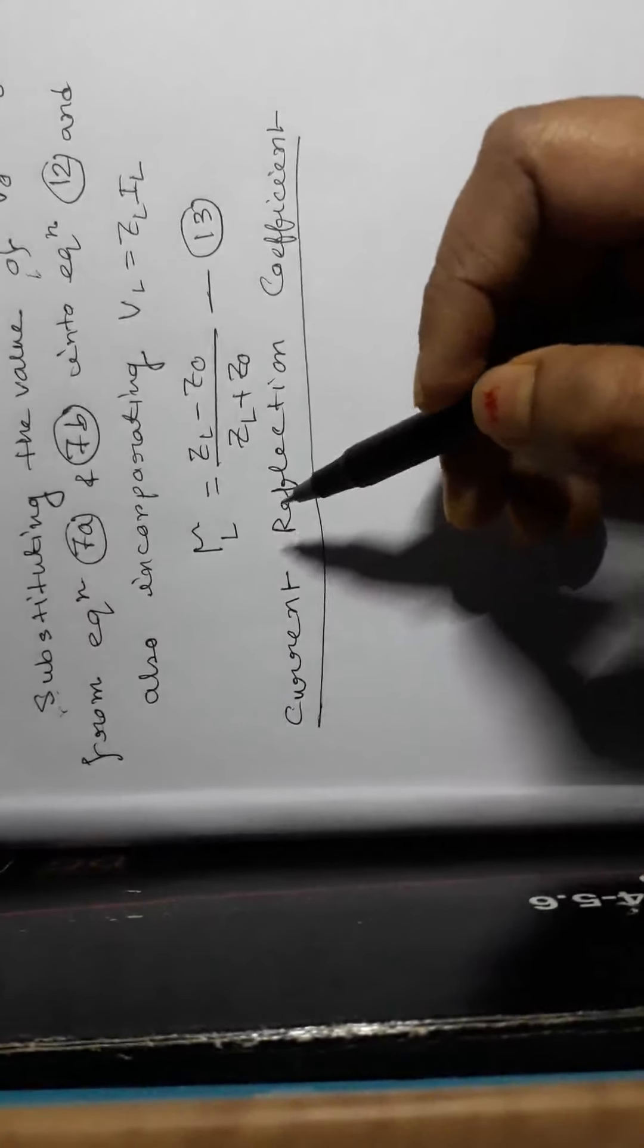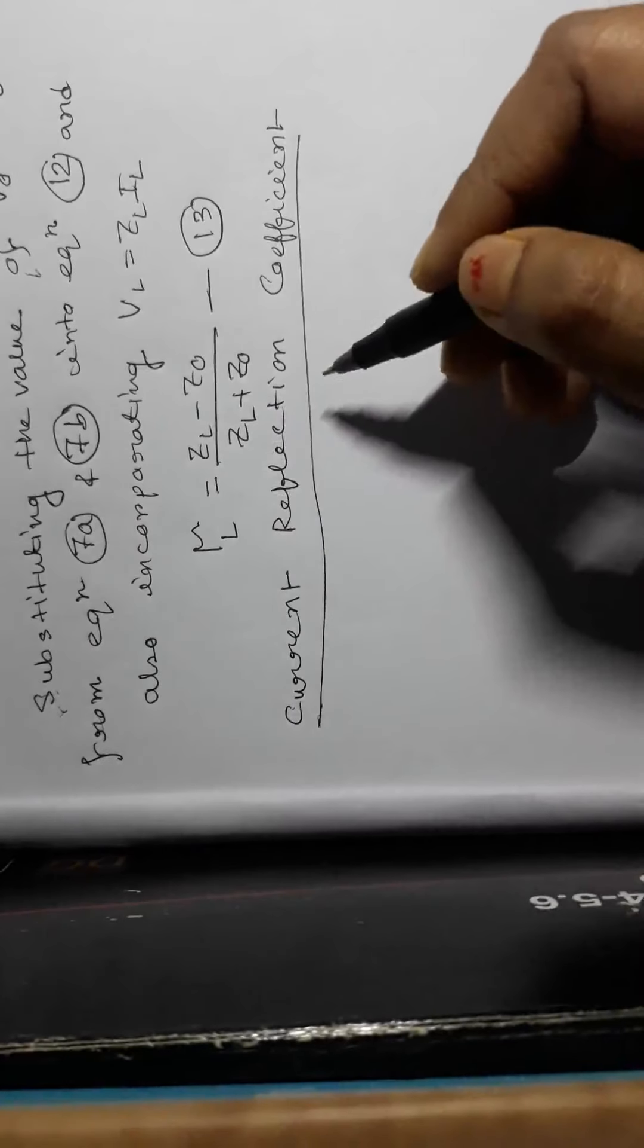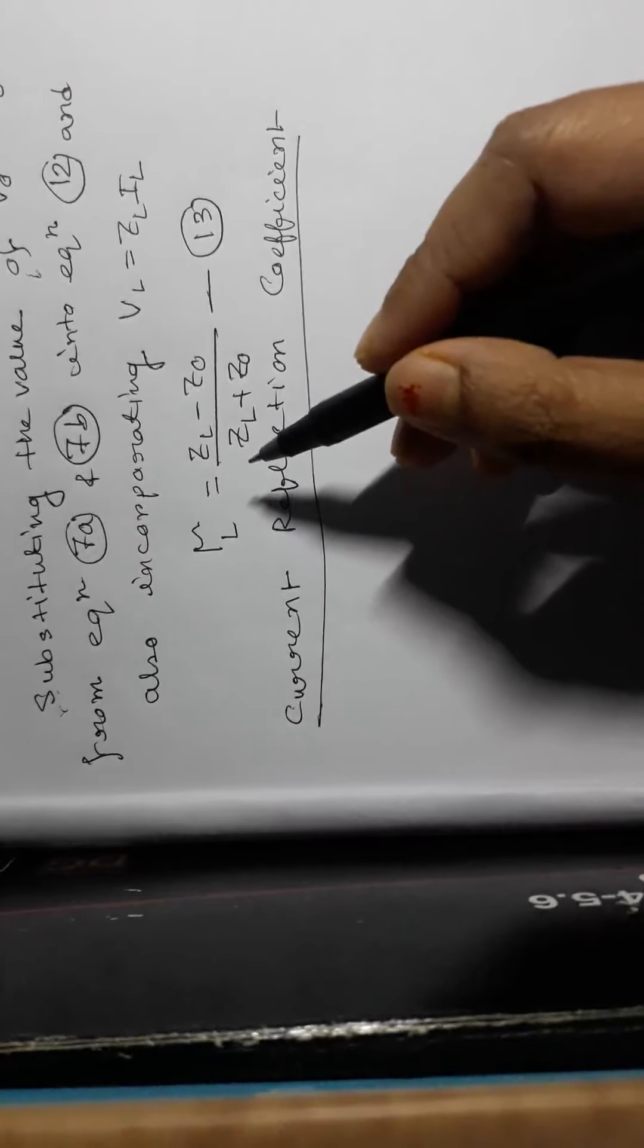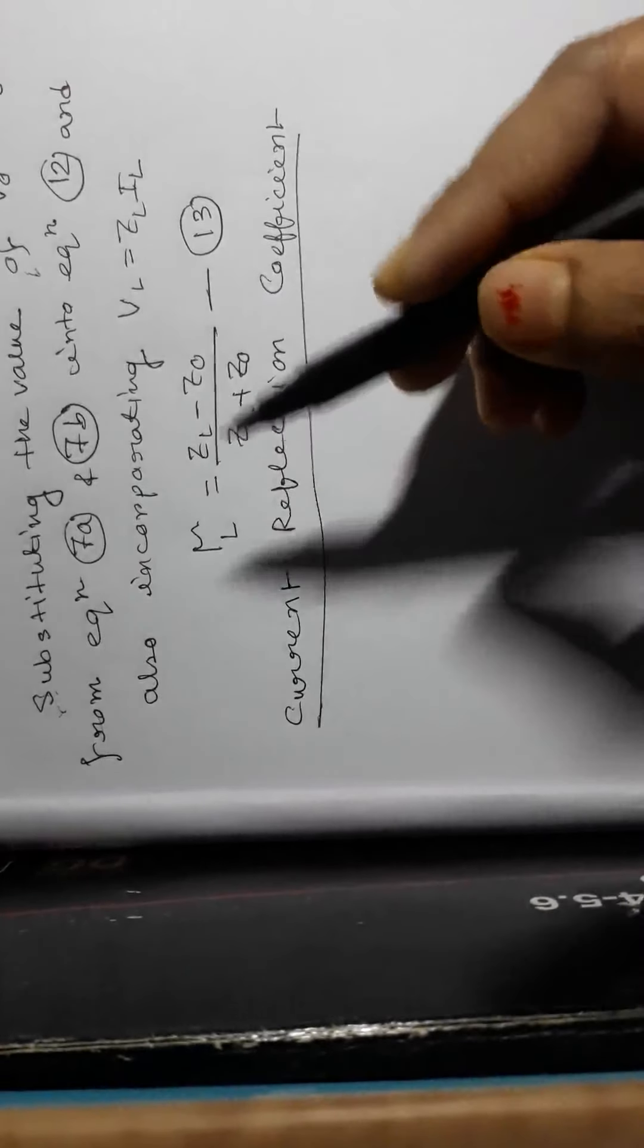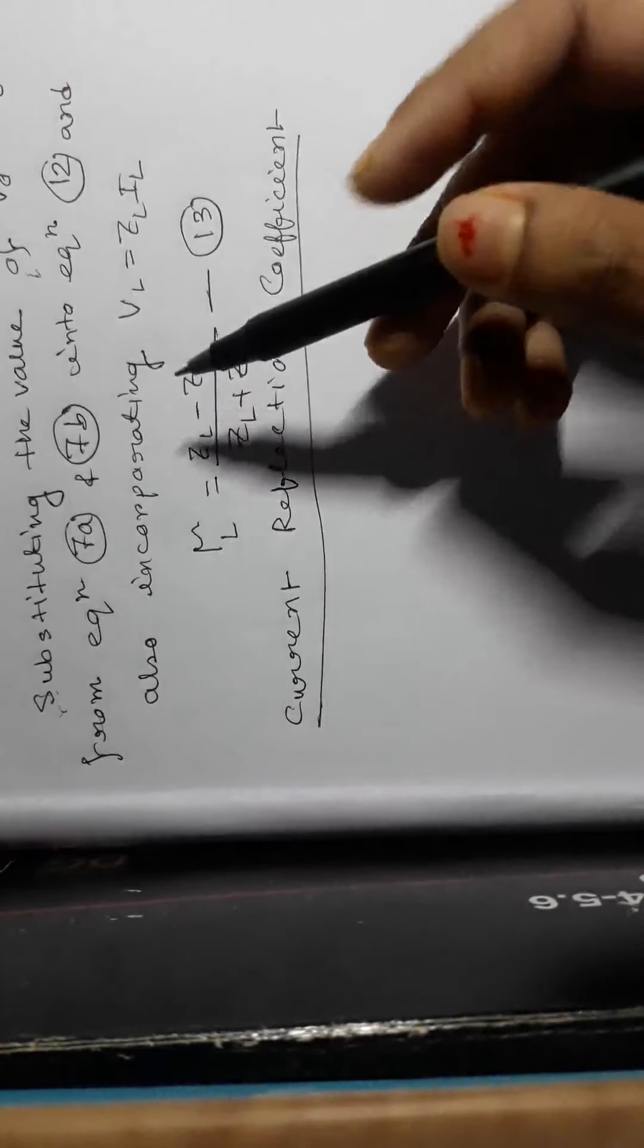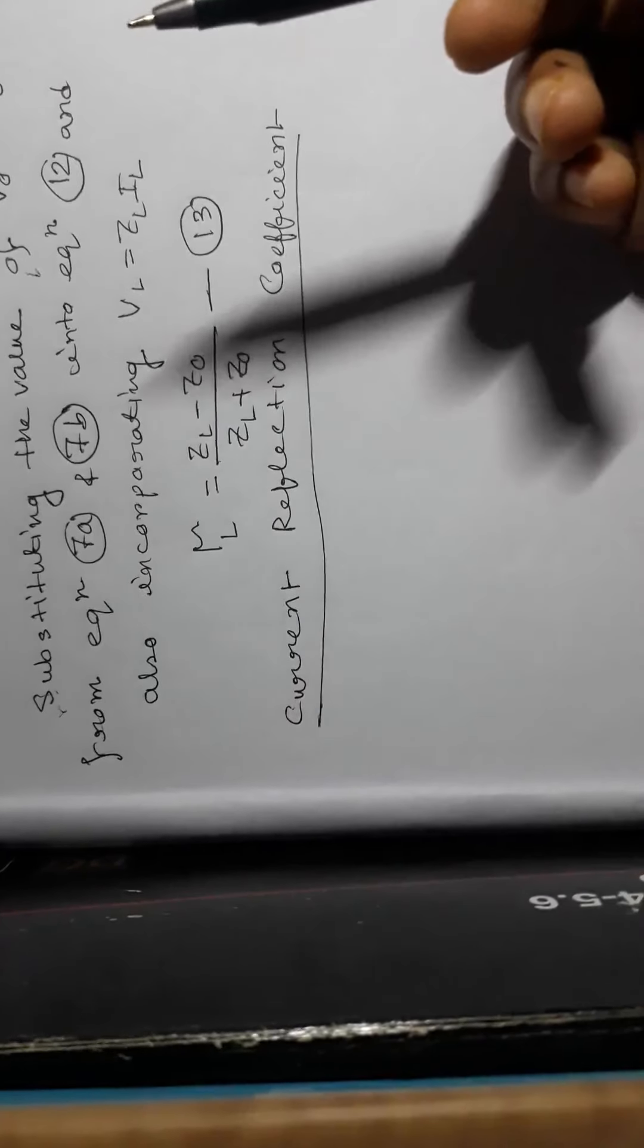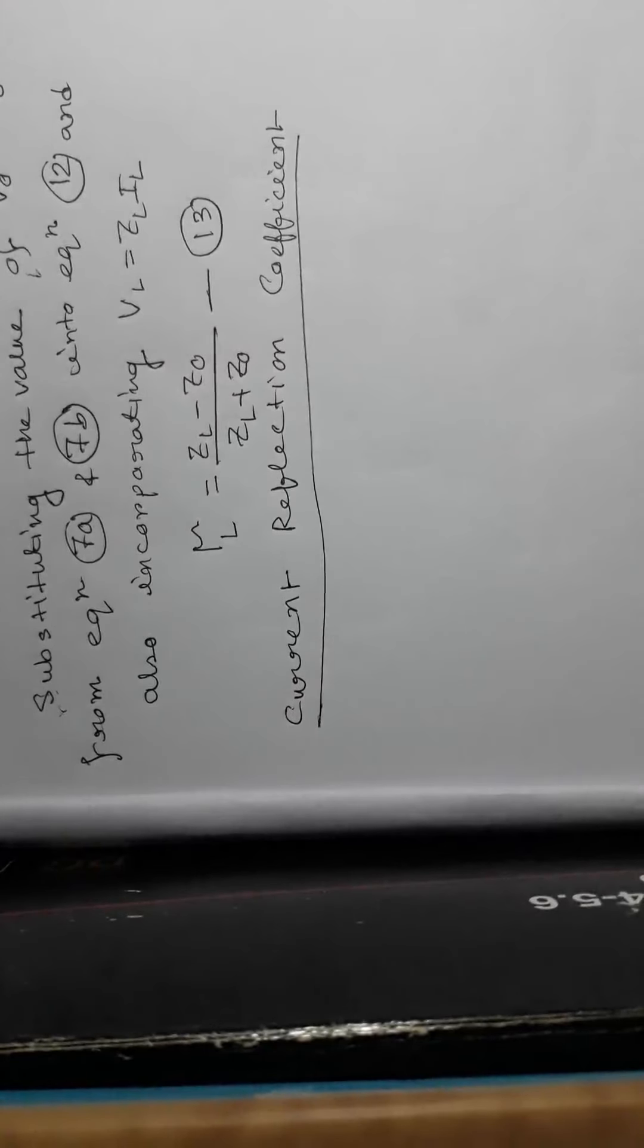it is the same as voltage reflection coefficient, in that at any point on the line, the current reflection coefficient will be the negative of the voltage reflection coefficient at that point.